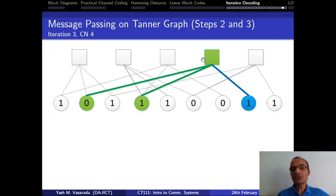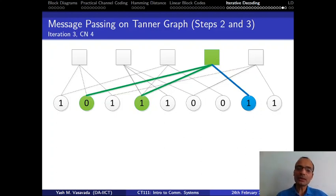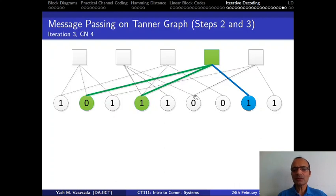If a node is connected to 100 different nodes — suppose a particular check node is connected to 100 variable nodes — then it will have to get messages from all those 100 VNs, and then do some numerical computation roughly proportional to 100: maybe 100 sums or 100 multiplies. The same applies to what a VN has to do — that also depends roughly on the degree of that particular VN.